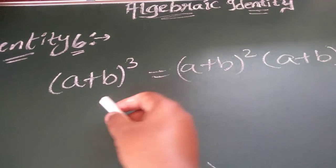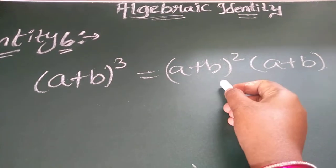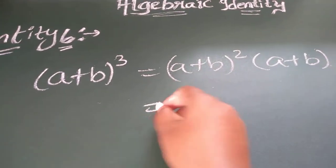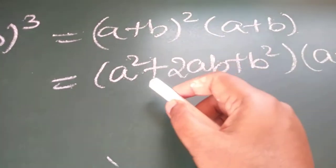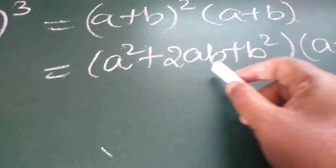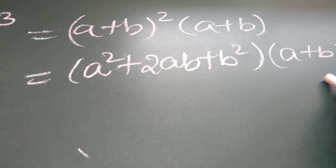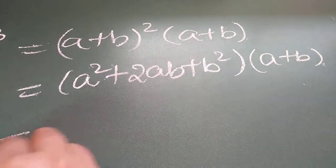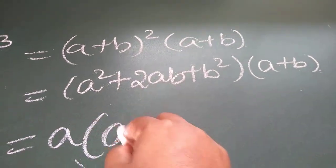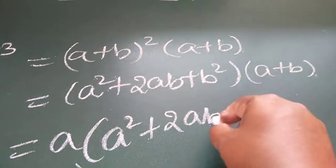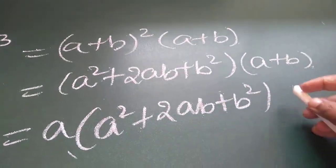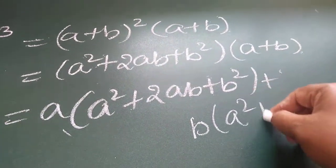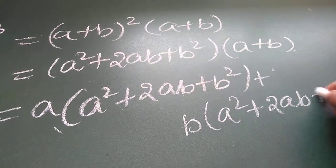Think of this as x cube — x cube can be written as x square into x. I know the expansion of a plus b whole square. I have written the expansion a square plus 2ab plus b square, multiplied by a plus b as it is. Now let me go for binomial multiplication: I will take a into a square plus 2ab plus b square, plus b into a square plus 2ab plus b square.